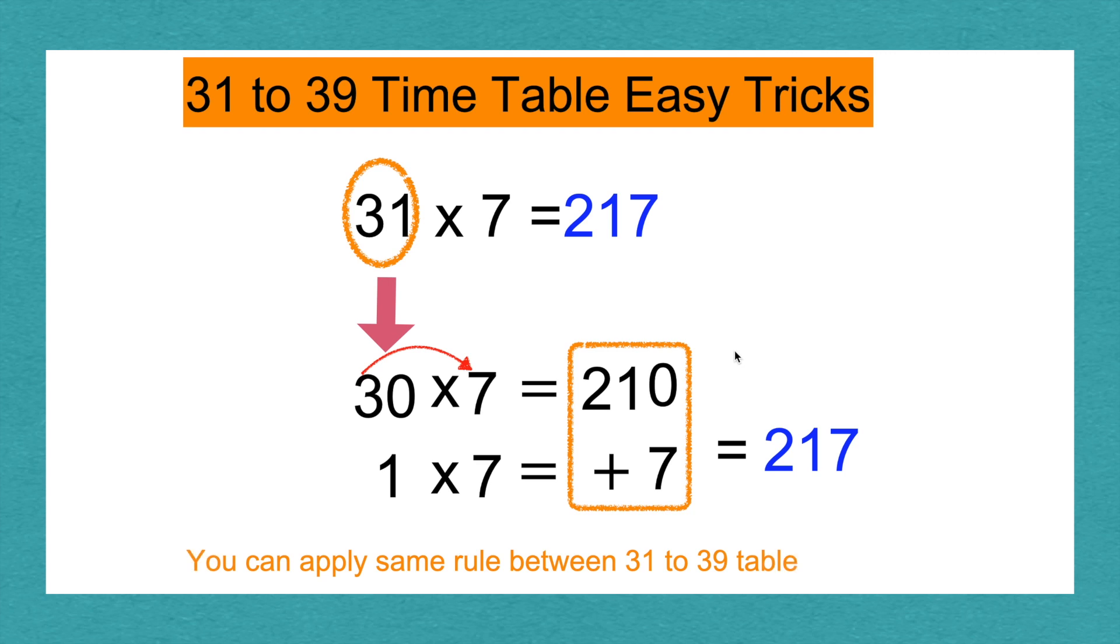You can apply the same rule between 31 to 39 timetables.